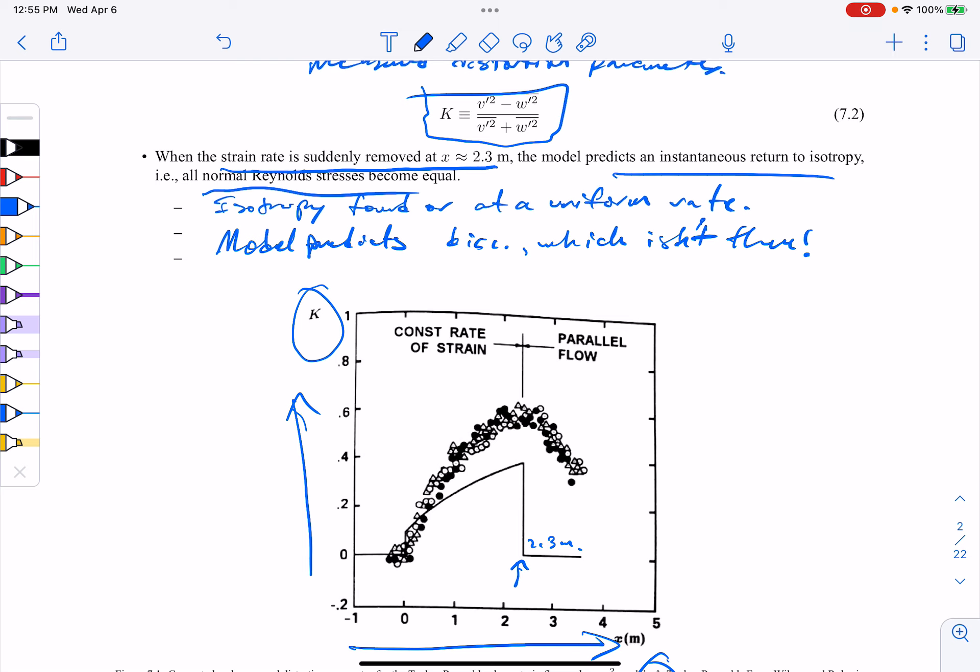It turns out there's many flows with strong curvature or separation, which the Boussinesq approximation just totally fails at. In the next class, we're going to look at some relations and closure in terms of the model.